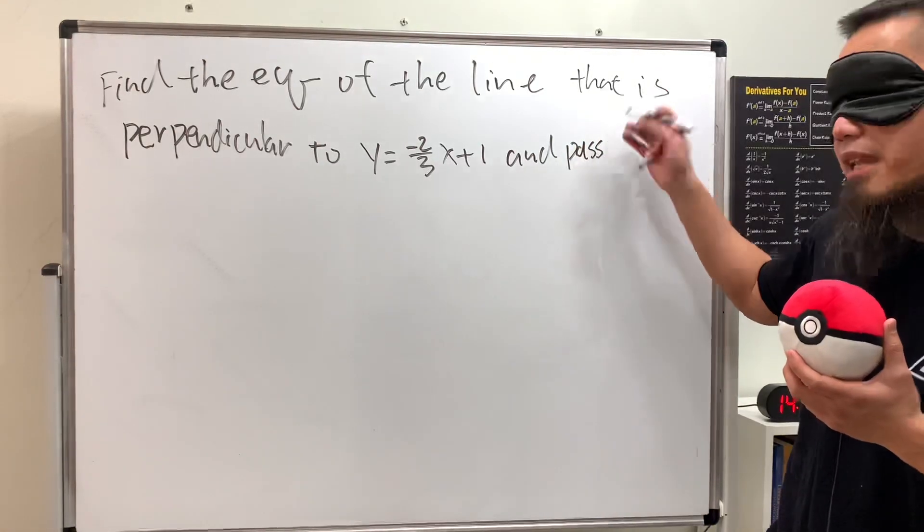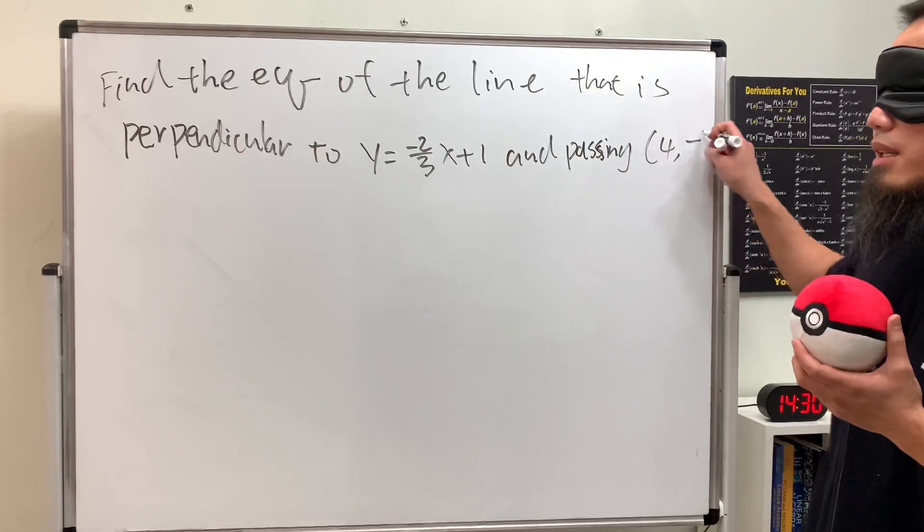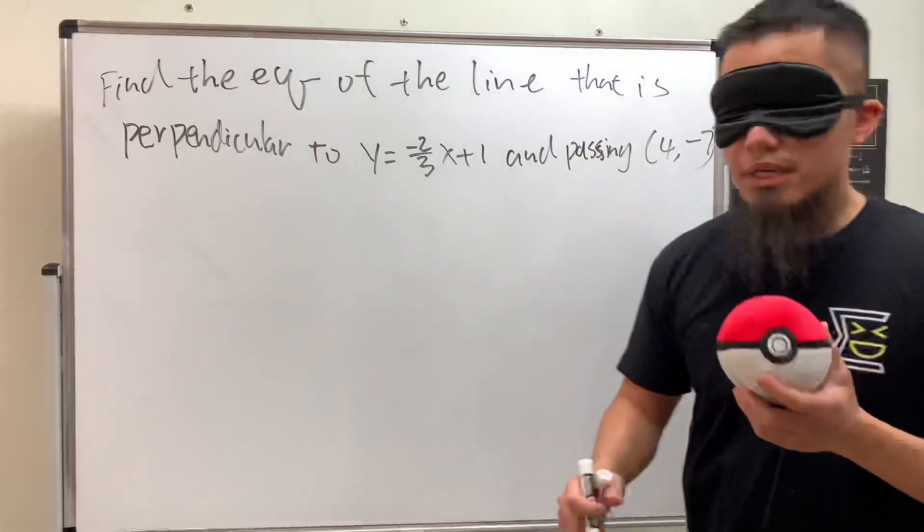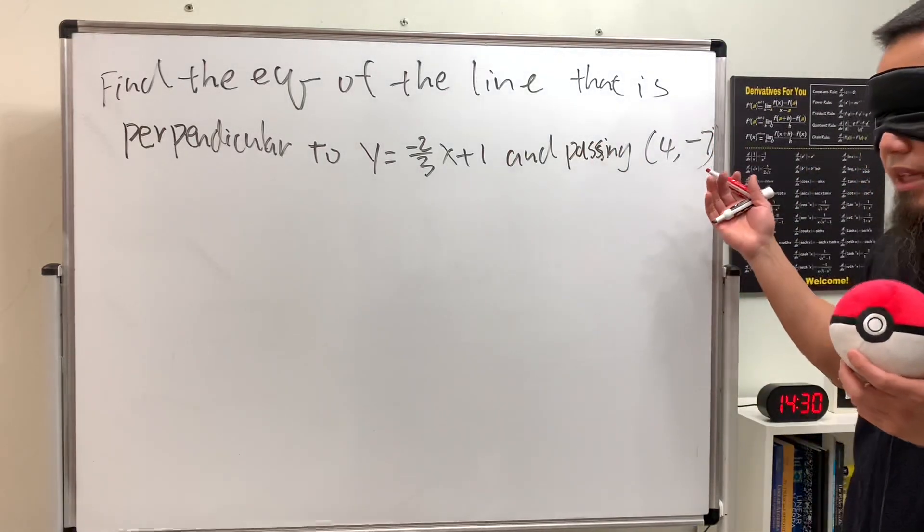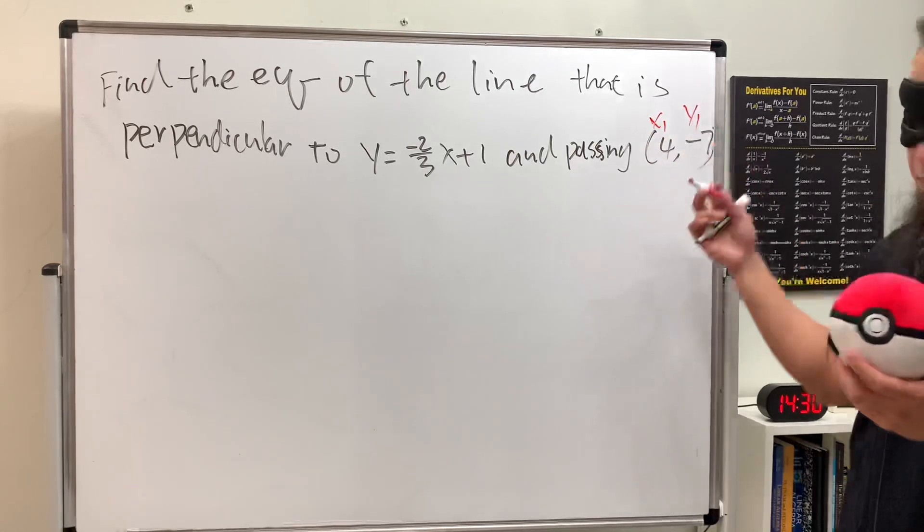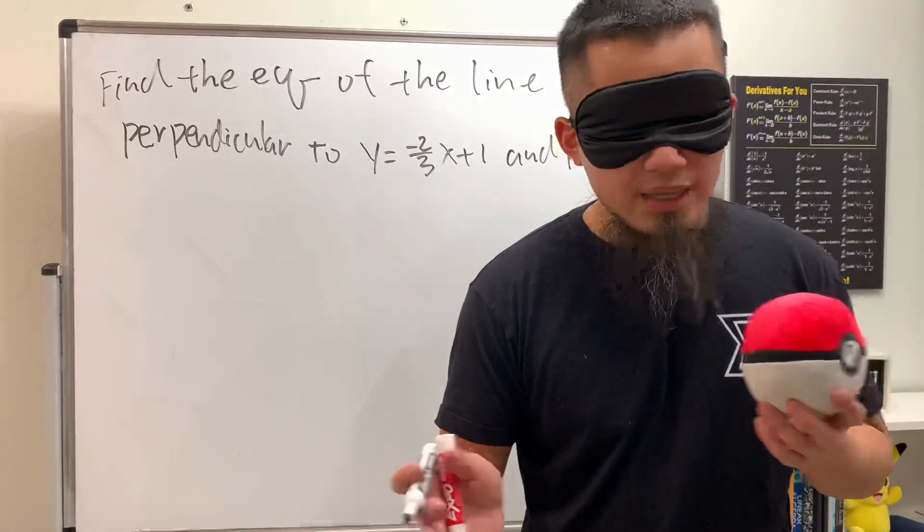Because we have a given point, four comma negative seven, I'm going to say this is x₁, y₁. Whenever we're trying to find an equation of a line, keep in mind we always need to get the slope first.